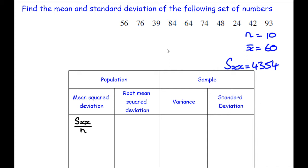To find the root mean squared deviation, it's going to be the root of S_xx divided by n, or the root of the mean squared deviation. The clue was right there in the name.